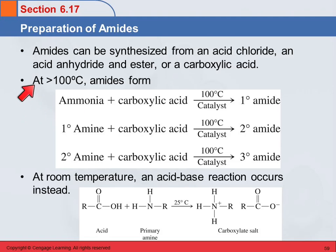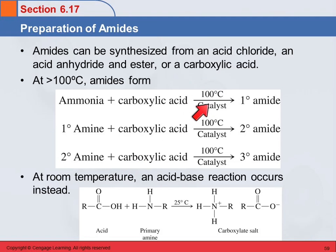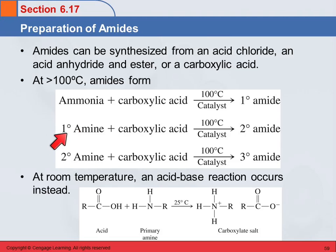You can make amides at high temperatures from ammonia or amines reacting with carboxylic acids. This is happening at 100 degrees Celsius or higher — the temperature of boiling water — and it does require a catalyst. Ammonia plus a carboxylic acid will get you a primary amide. A primary amine will get you a secondary amide.